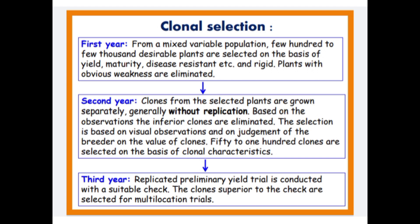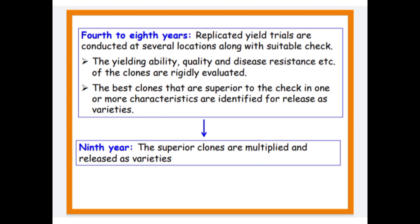50 to 100 clones are selected on the basis of clonal characteristics. In year 3, a Replicated Preliminary Yield Trial is conducted with a suitable check; clones superior to the check are selected for multi-location trials. From years 4 to 8, replicated yield trials are conducted at several locations with a suitable check. Yield, ability, quality, and disease resistance of the clones are rigorously evaluated. The best clones superior to the check in one or more characteristics are identified for release as a variety. In year 9, the superior clones are multiplied and released as a variety.